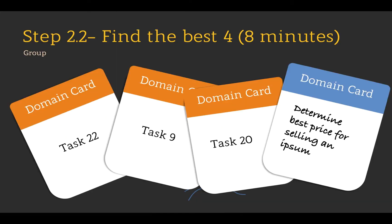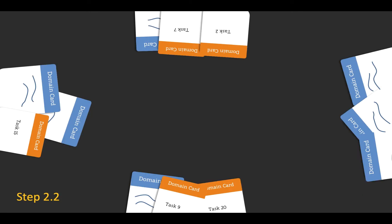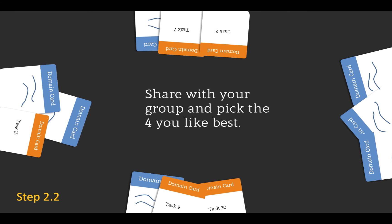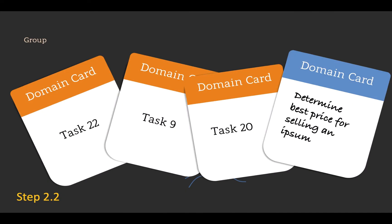Step 2.2 is where we first start working in groups. The goal is to find four domain cards — four tasks to pursue as a group. You have about eight minutes, so it's very quick. You're going to pitch your ideas about what you think are most interesting and most important, then come to a decision about the four you want to pursue for the rest of the exercise. Each of you has three; share them with your group and pick the four you like best. These will be the things you keep in mind as you do the design exercise.